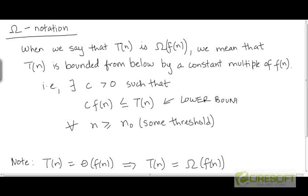The Big O notation was specifying an upper bound, and the Big Theta notation was specifying both a lower bound and an upper bound.